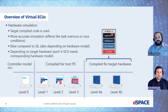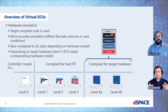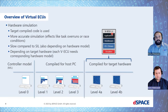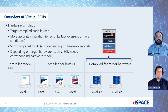This makes the simulation very accurate. You can even simulate timing effects like task overruns or race conditions if you have a multi-core system. On the other hand, this also slows down the simulation — you get a much slower simulation compared to standard SIL — and you're restricted to that specific hardware. These are the basic differences between up to Level 3 virtual ECUs and Level 4.